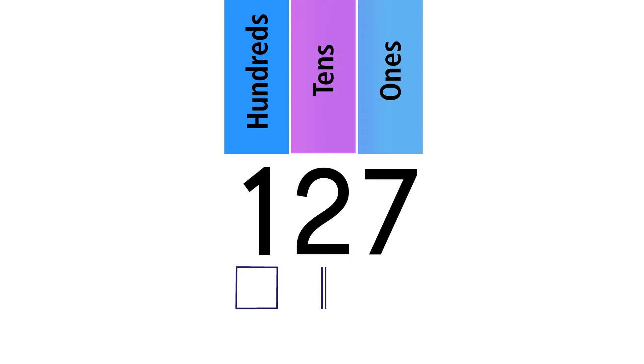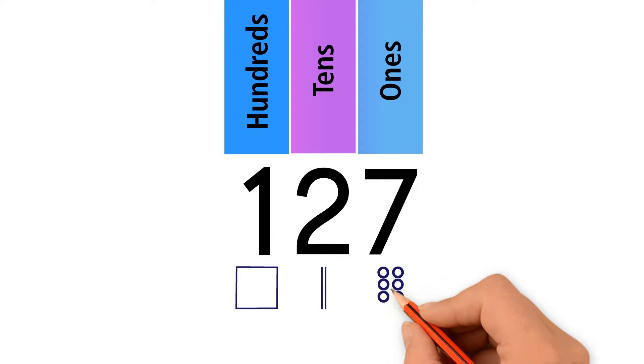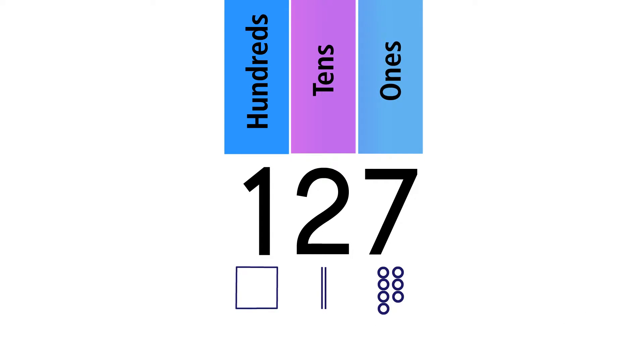1 bar represents 10. We have a 7 in the ones place, so we draw 7 circles. A circle represents 1.